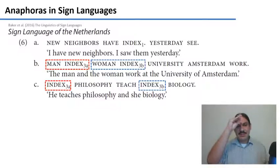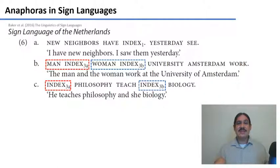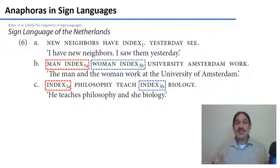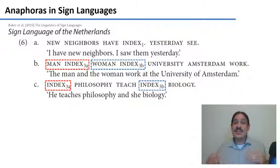You can have 'man index-3a' and 'woman index-3b,' and then in the following sentence, 'index-3a philosophy teach, index-3b biology' — meaning 'he teaches philosophy, she biology.' These work like pronouns — the two regions of space get their meanings from the preceding discourse, functioning as anaphoric reference.